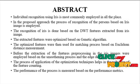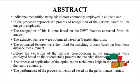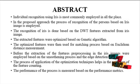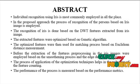Hence, classification is done by two types: the first one is the Euclidean distance-based classification, and the second one is the SVM classification.